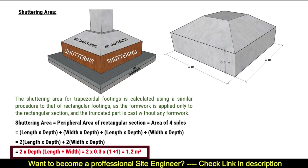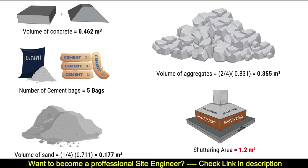And that's it. Here's your final result: Concrete volume equals 0.462 cubic meters. Number of cement bags equals 5 bags. Quantity of sand equals 0.177 cubic meters. Quantity of aggregates equals 0.355 cubic meters. And shuttering area equals 1.2 square meters.